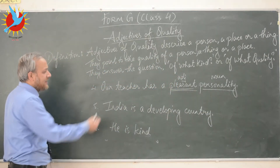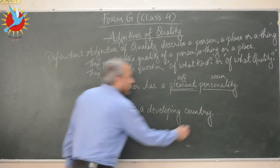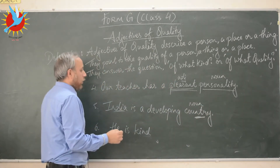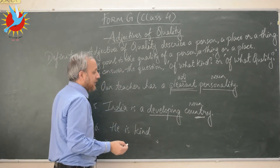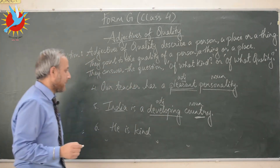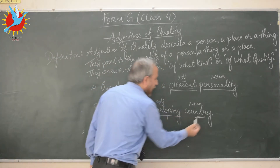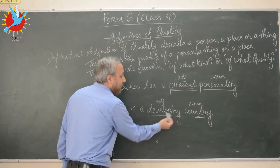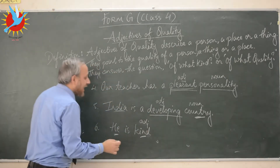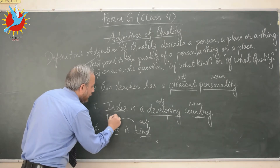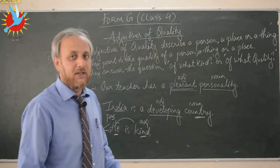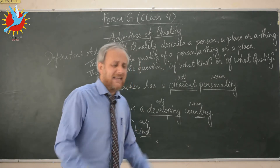In sentence five, 'India' is a proper noun and 'country' is a common noun. What kind of country is it? It is a developing country, so 'developing' becomes a descriptive adjective or adjective of quality — it points to the quality of the country. And 'he is kind': 'he' is a pronoun and 'kind' is a descriptive adjective giving more information about the pronoun 'he.'